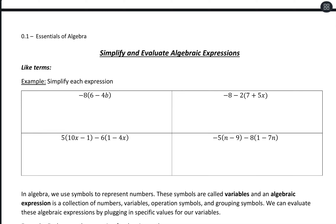Now we're going to look at expressions that include variables, and with that we need to be able to recognize what are like terms. Like terms should include the same variables and the same exponents. That's the short way to remember if things are like terms — same variables and exponents.